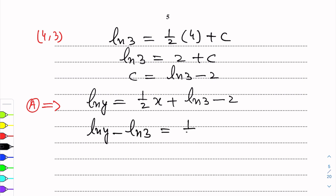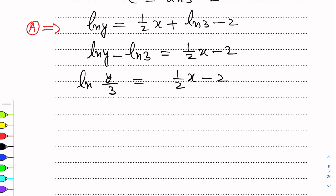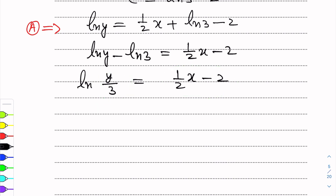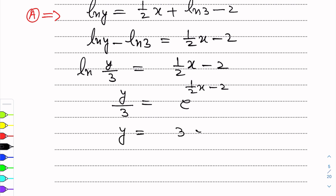Substituting back, we have log y = (1/2)x + (log 3 - 2). Using log properties, log y minus log 3 equals (1/2)x minus 2, which gives log(y/3) = (1/2)x - 2. Using the anti-log process with base e: y/3 = e^((1/2)x - 2), so the final answer is y = 3e^(x/2 - 2).